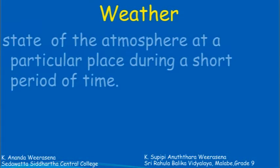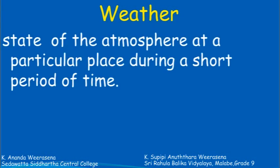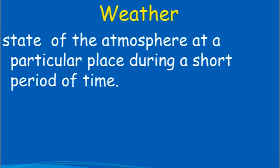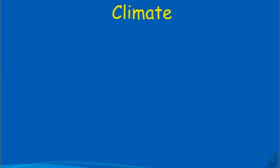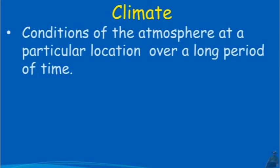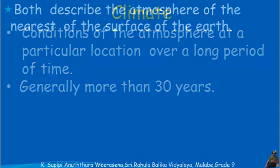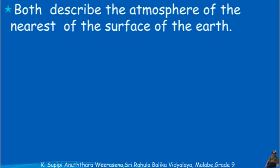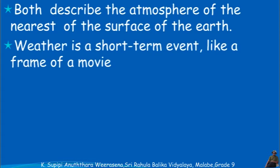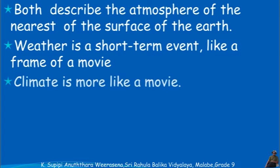Weather is the state of the atmosphere at a particular place during a short period of time. Climate refers to the conditions of the atmosphere at a particular location over a long period of time, generally more than 30 years. Both describe the atmosphere near the surface of the earth. Weather is a short-term event like a frame of a movie, whereas climate is more like a movie.